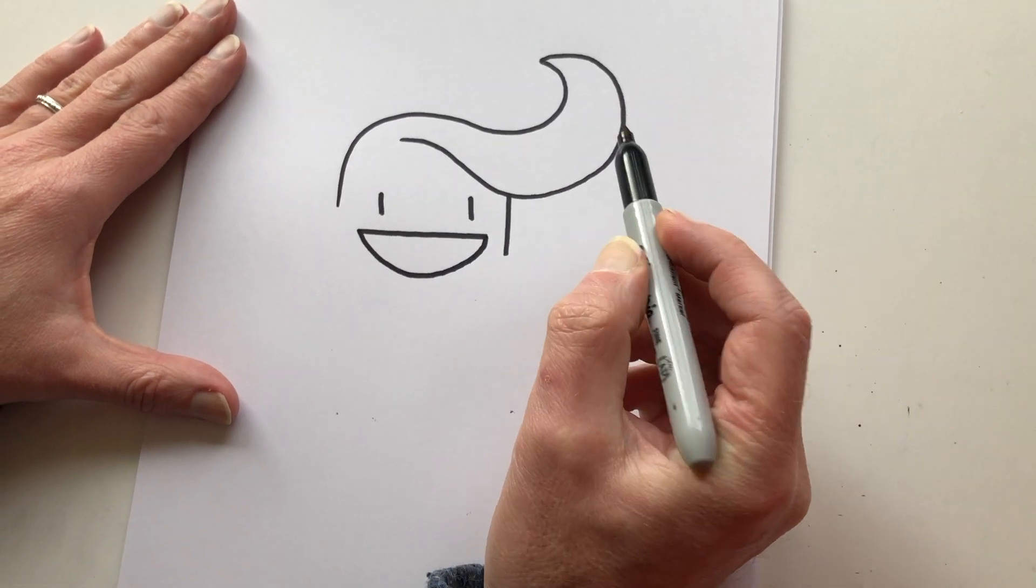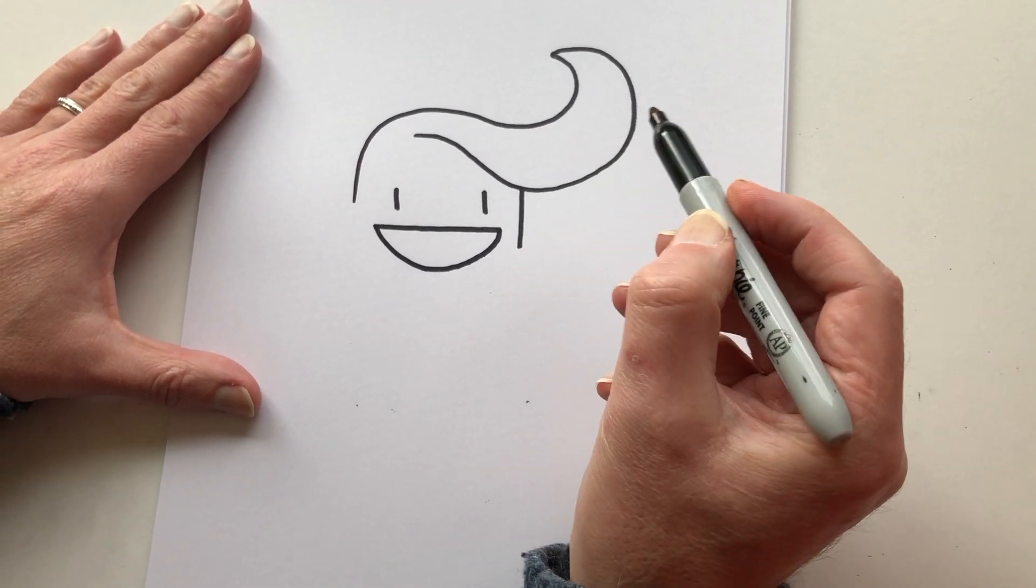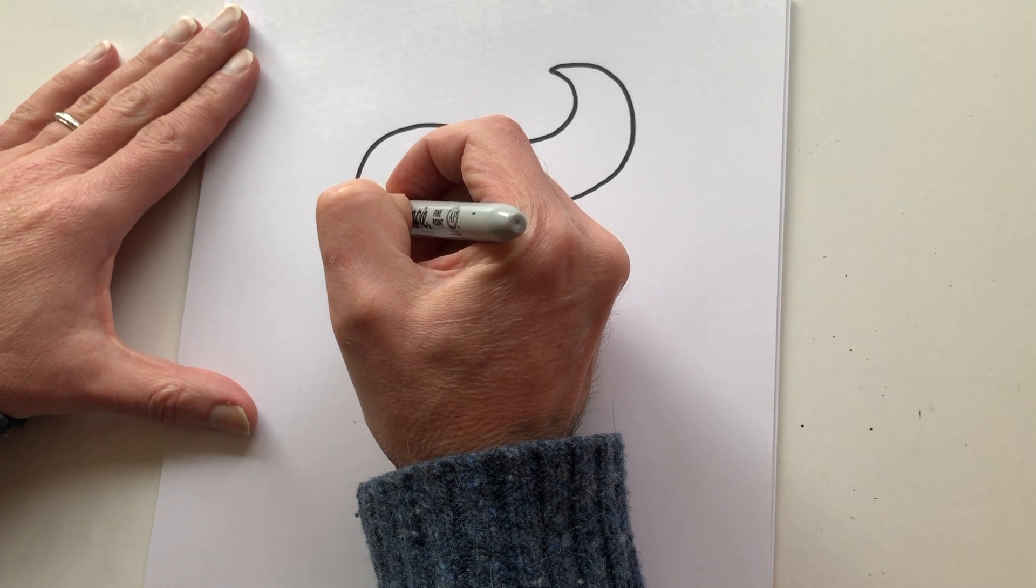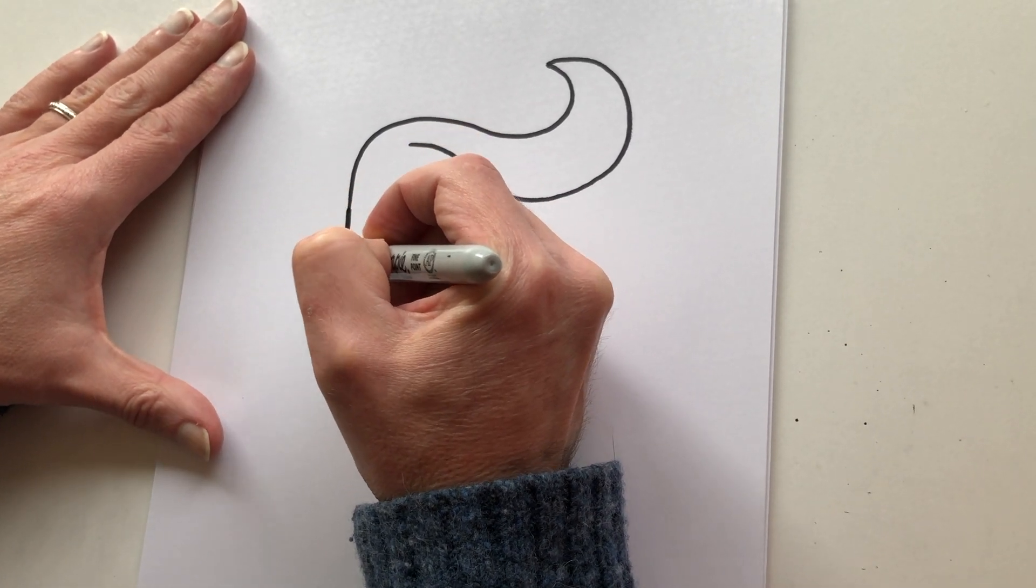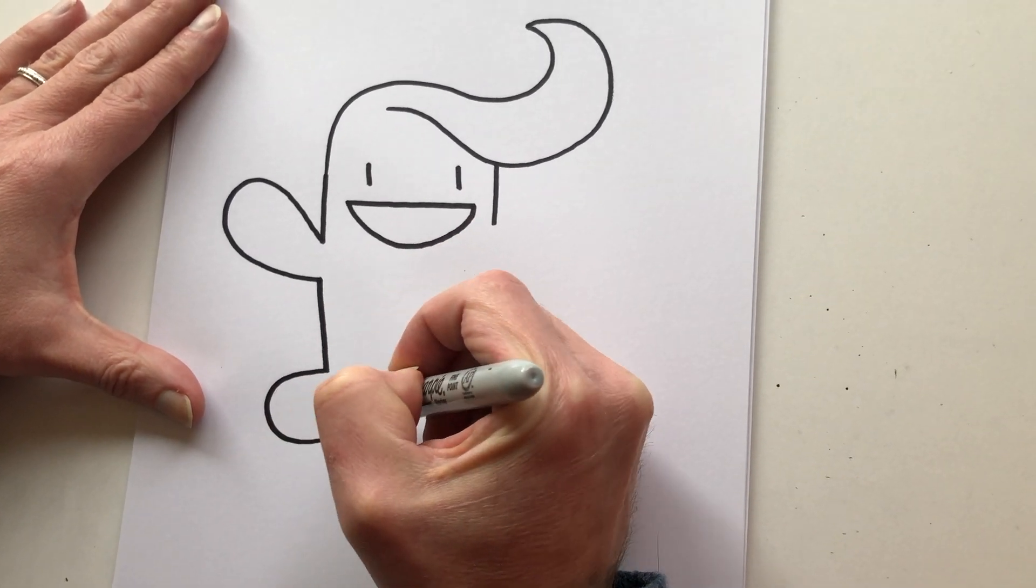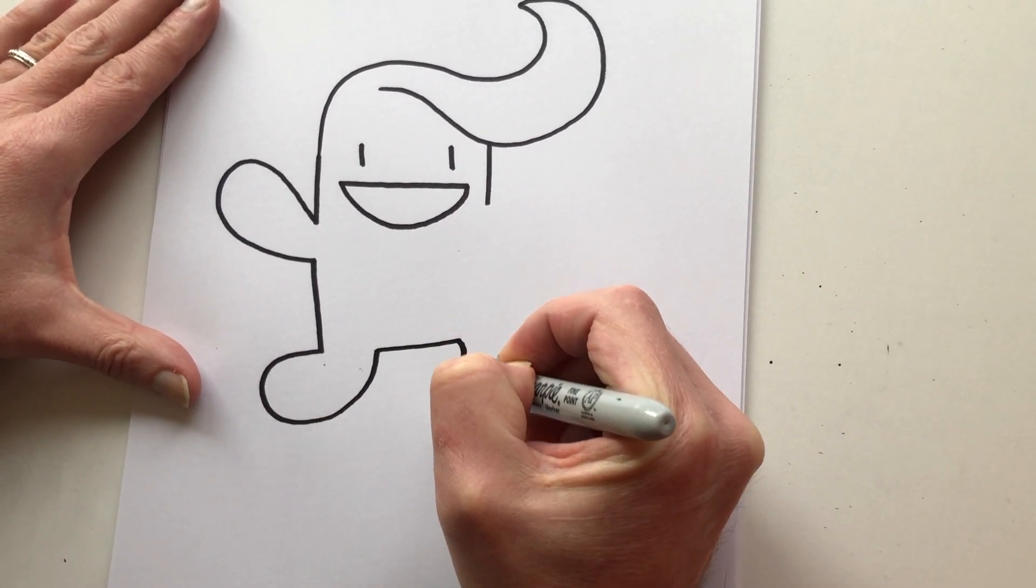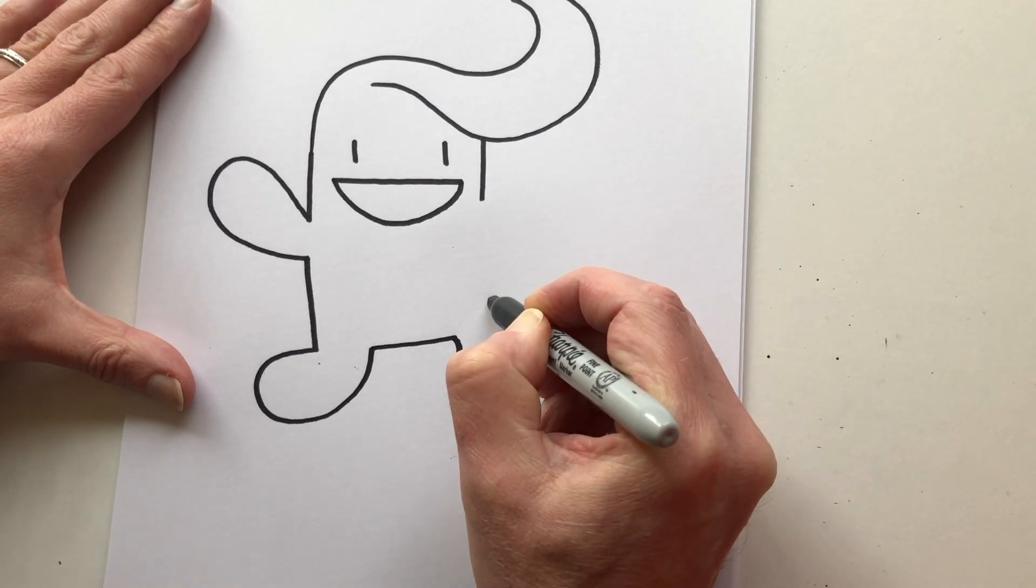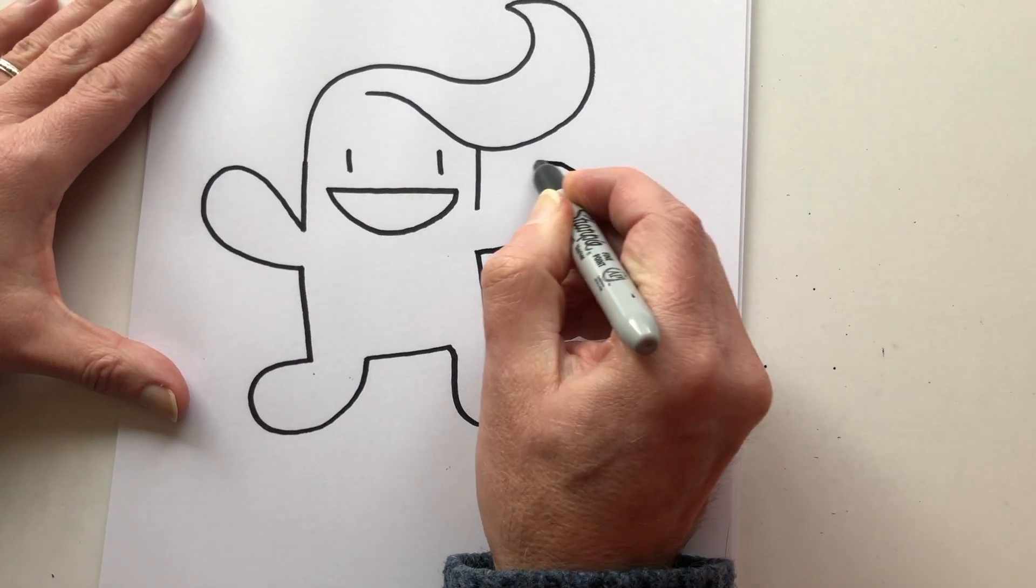Okay, now here's the really hard part. I draw the entire rest of his body with one line. Start at the back of his head, come down, an arm, come down, a leg, over, another leg, up, and his other arm.